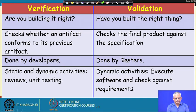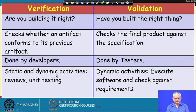Verification can be a static or dynamic activity. In a static activity you do not need to execute the program — for example, review is a static activity. Or you might have to actually run the program, which is a dynamic activity; unit testing is a dynamic activity. Validation is always a dynamic activity — we execute the software and check against the requirements.